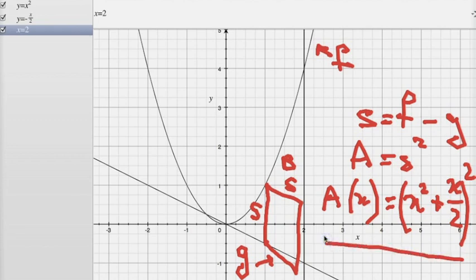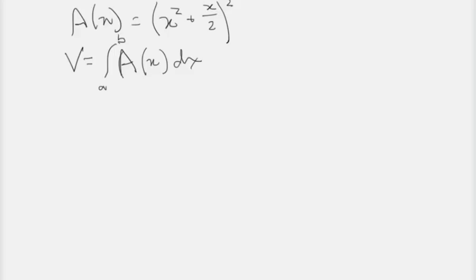Okay, so given our general formula for volume, the integral between the limits of the cross-sectional area formula, we can just plug this cross-sectional area formula into there and our limits, which are 0 and 2. So we will get an expression for the volume as the integral between 0 and 2 of (x squared plus x over 2) squared dx.